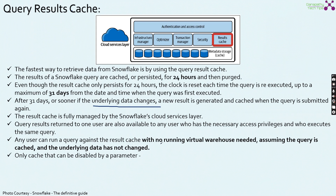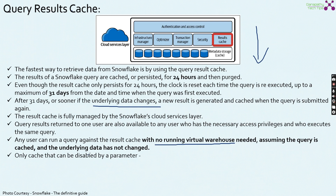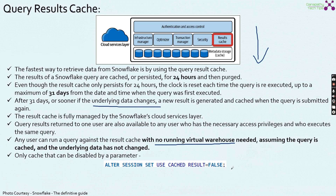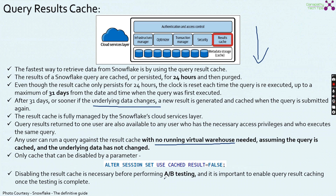Any user can run a query against the results cache with no running virtual warehouse needed, assuming the query is cached and the underlying data has not changed. The only cache that can be disabled using a parameter is the query results cache — the other two caches cannot be disabled. You can disable it using: ALTER SESSION SET USE_CACHE_RESULT = FALSE. Disabling the results cache is necessary if you are doing A/B testing, and it is important to re-enable results caching once your testing is completed.